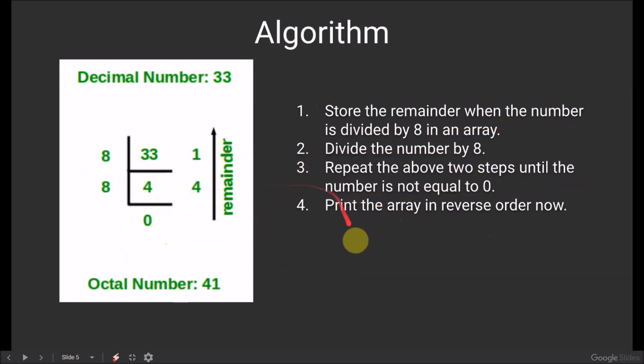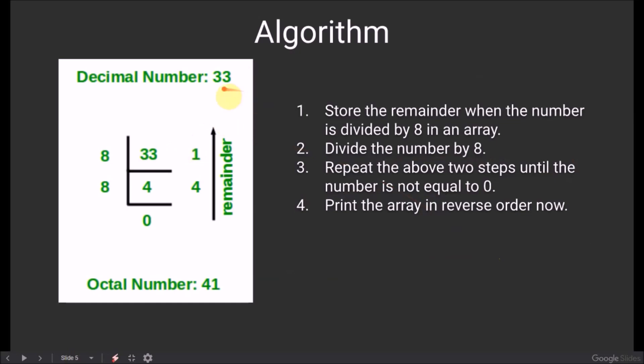Let us understand this with an example. Suppose the decimal number is 33. Step 1: We store the remainder that is obtained when 33 is divided by 8 into the array. That is, 1.